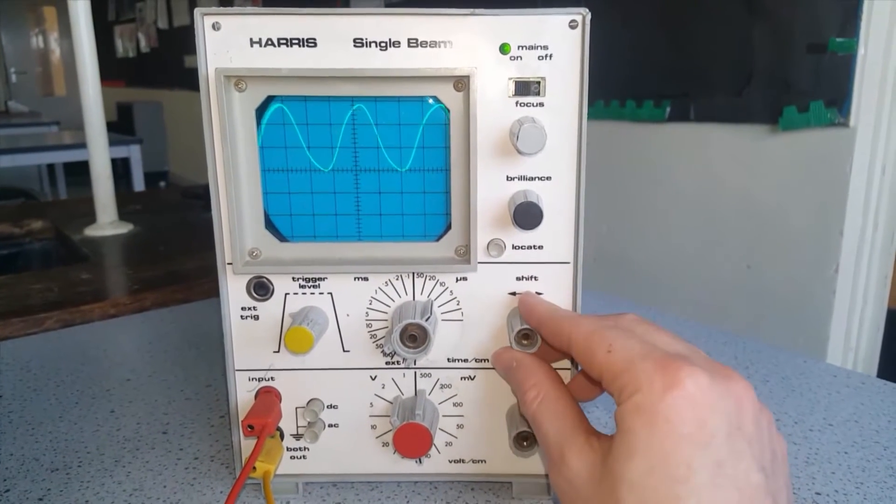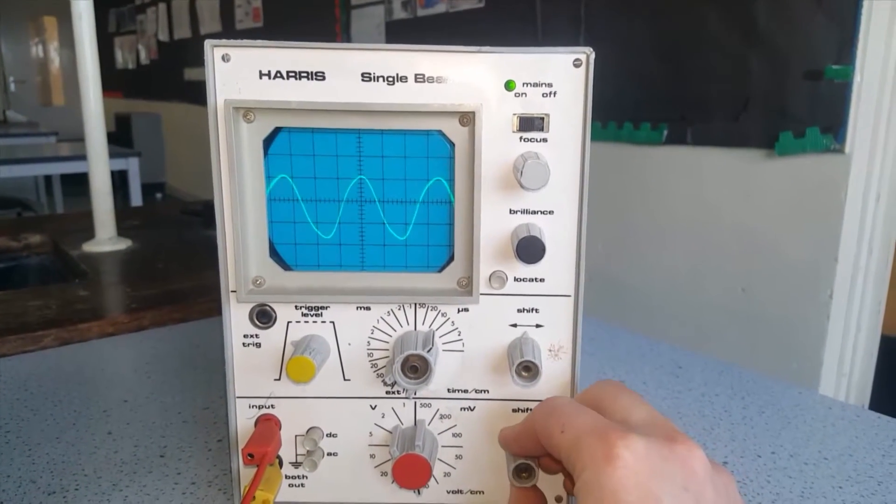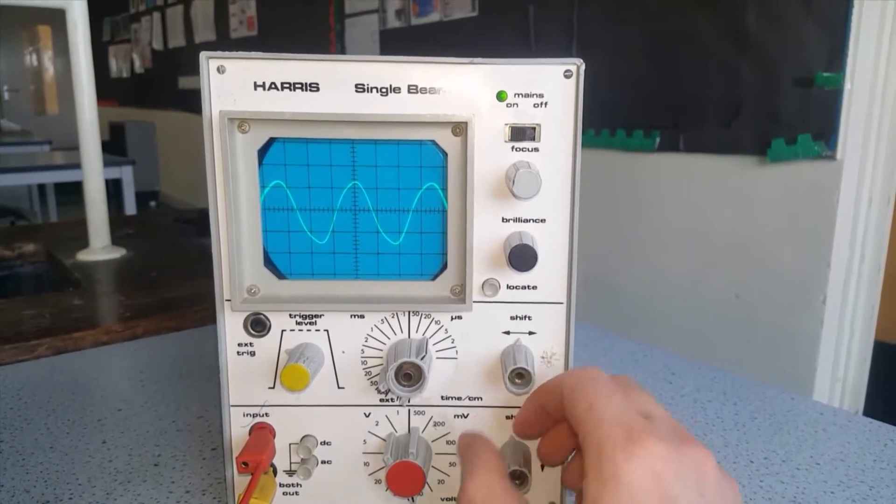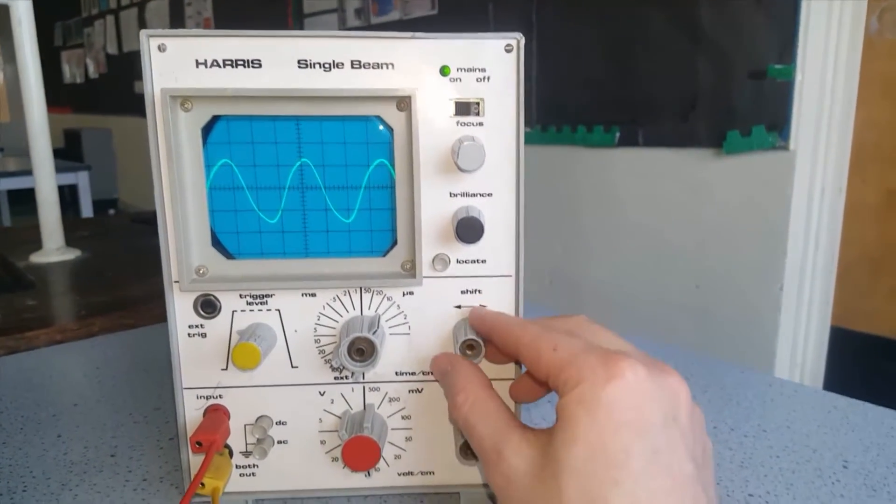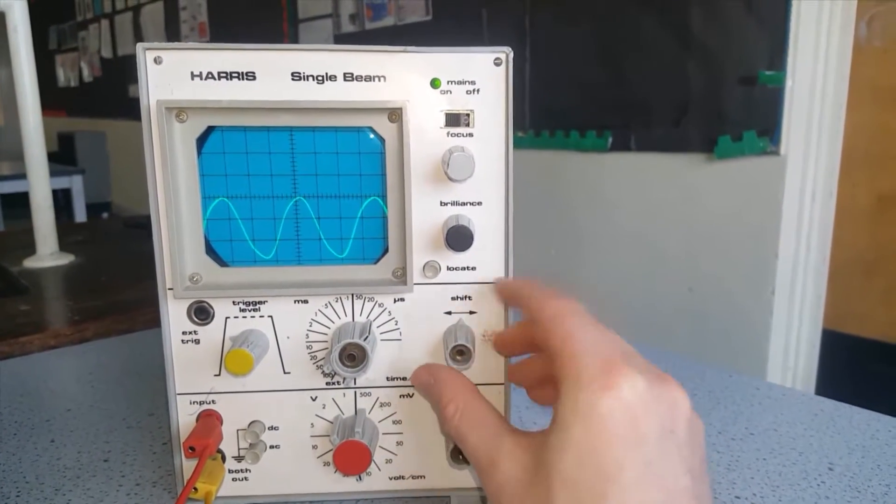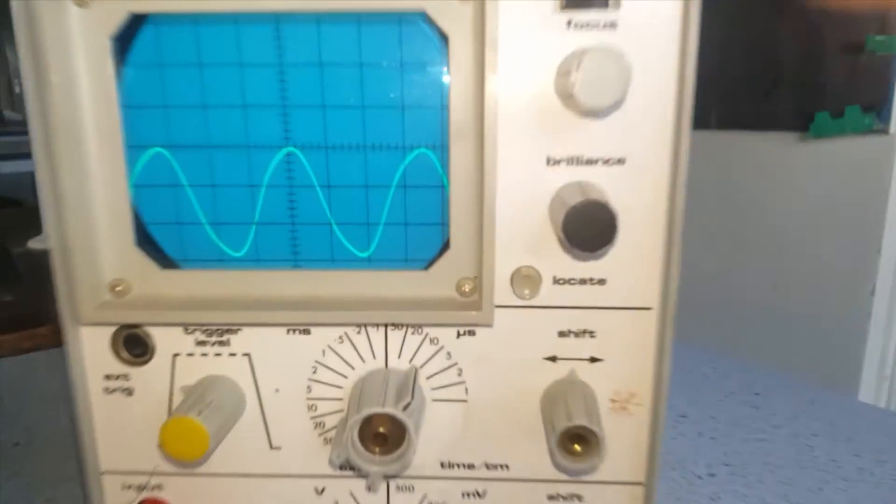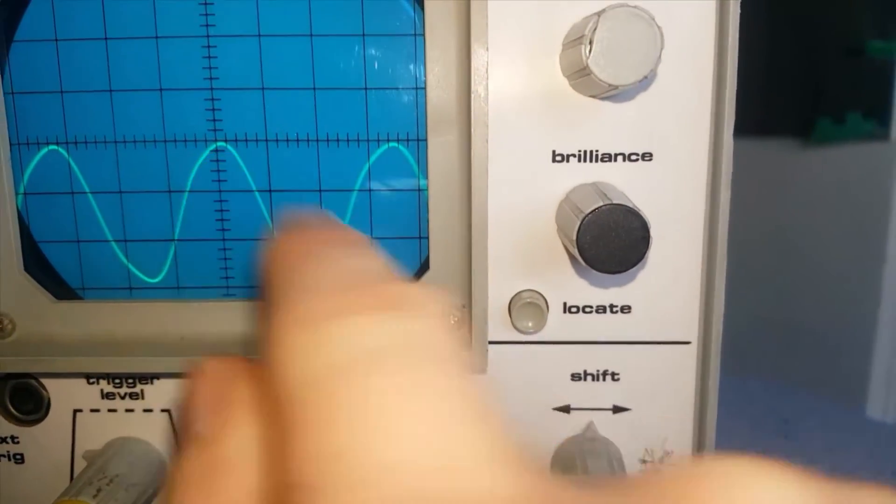Now we can do a similar trick to work out the time period and therefore the frequency. So to do that we can shift the wave down, so we're touching our axis here, positioning the wave just at the centre there.